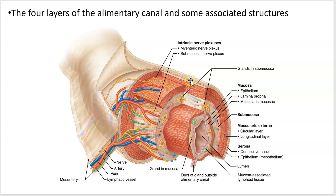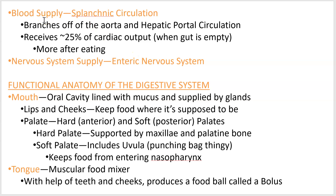Lastly, the serosa is primarily a connective tissue layer — this is where you get the connection to the mesentery and the surrounding body wall and other tissues. The splanchnic circulation is how blood gets into the digestive system, coming from aortic branches such as the celiac trunk and the superior mesenteric artery. At rest, about a quarter of your heart's output goes to the digestive system, and that goes up considerably after eating. The specific branch of the nervous system supplying the digestive system is called the enteric nervous system.